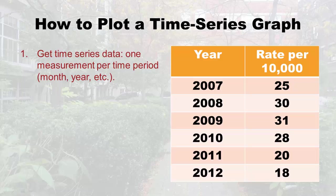I'm going to go through roughly how you make one. The first thing you need is a table like the one on the right — I just made up these data. You need a column with regular time increments in the first column, then the variable measured at that time in the next column. Normally, when you're going to do time series work, you start and collect the data as you go along, and then it's nice and accurate.